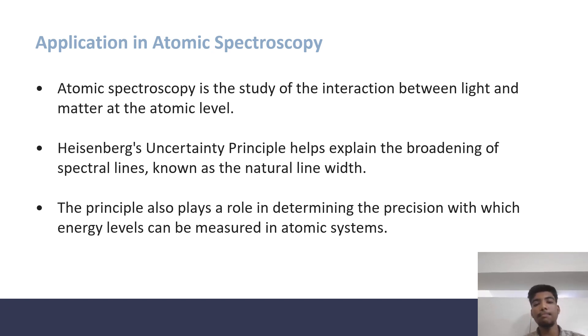Heisenberg's Uncertainty Principle helps explain the broadening of spectral lines, known as the natural line width. The principle also plays a role in determining the precision with which energy levels can be measured in atomic systems.